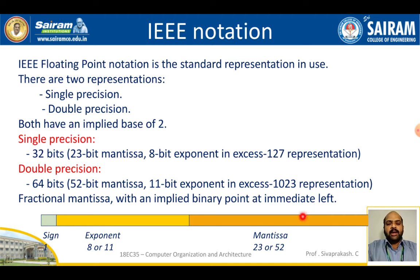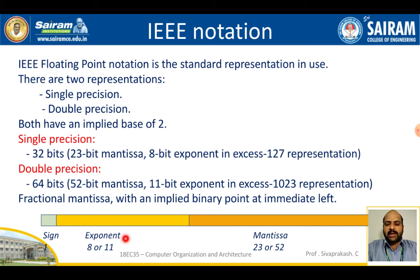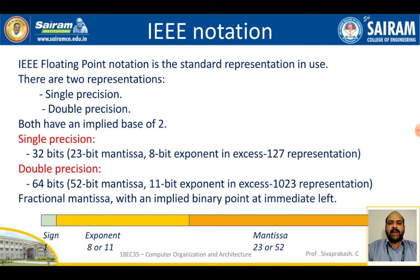To summarize: in 32-bit single precision, bits 0–22 are mantissa, bits 23–30 (8 bits) are exponent, and bit 31 is the sign. In 64-bit double precision, bits 0–51 are mantissa, bits 52–62 (11 bits) are exponent, and bit 63 is the sign. The combination of mantissa, exponent, and sign is called IEEE notation.